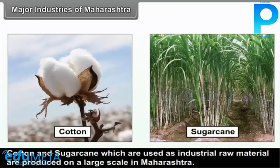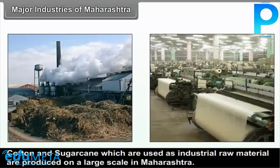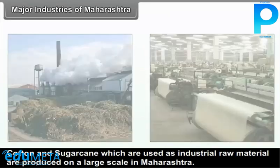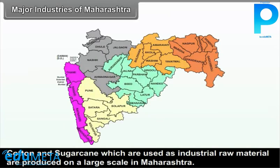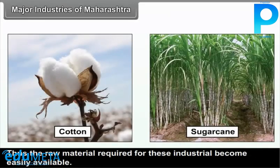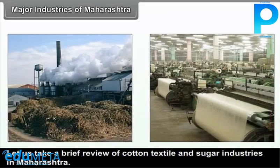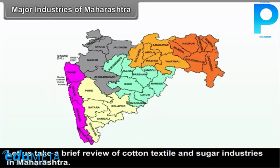Cotton and sugarcane, which are used as industrial raw materials, are produced on a large scale in Maharashtra. Thus, the raw material required for these industries becomes easily available. Let us take a brief review of cotton textile and sugar industries in Maharashtra.